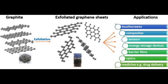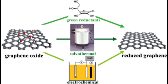Liquid phase exfoliation (LPE) involves breaking down graphite into graphene flakes using a solvent and mechanical or ultrasonic agitation. This method is scalable and can produce graphene in liquid form, making it suitable for various applications such as inks and coatings.